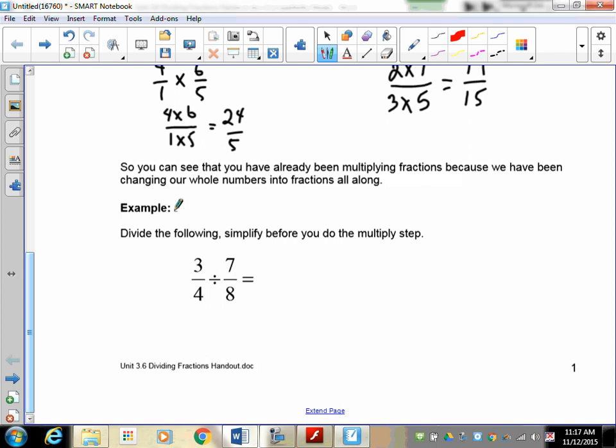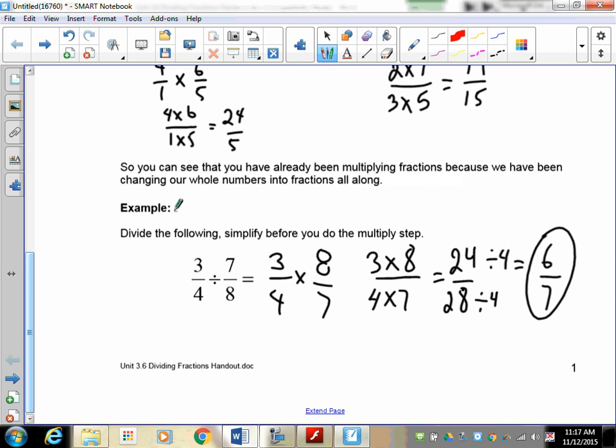Okay here we go. First flip and multiply. The three over four does not change but the seven over eight becomes eight over seven. So now that we've got the flipping part done, now we multiply. This becomes three times eight over four times seven. Three times eight is twenty four, four times seven is twenty eight. And we need to reduce this. So you can just divide both of these by four. Twenty four divided by four is six, twenty eight divided by four is seven. So there's your answer.